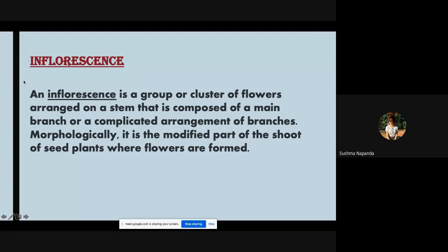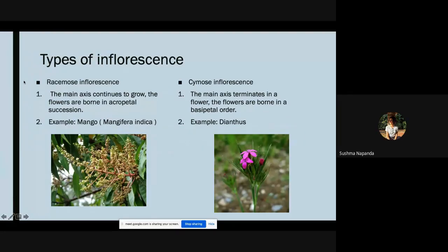There are two types of inflorescence: racemose inflorescence and cymose inflorescence. In racemose inflorescence, the main axis continues to grow. The flowers are born in acropetal succession, which means that the new flowers are at the apex.